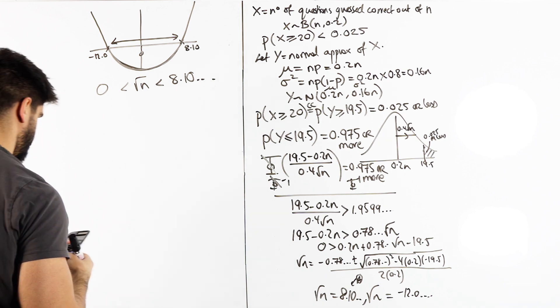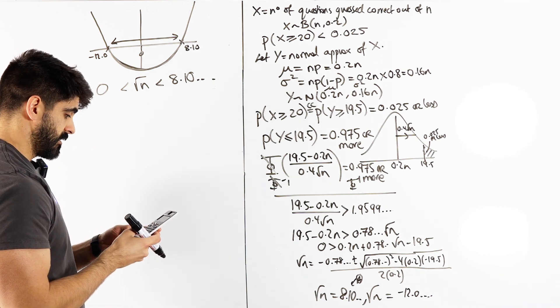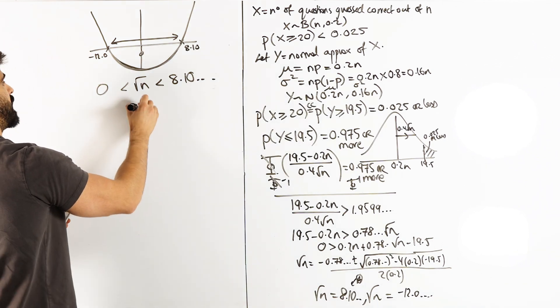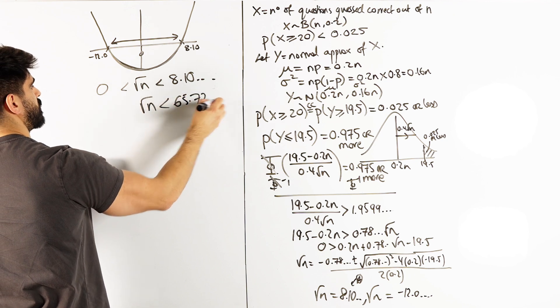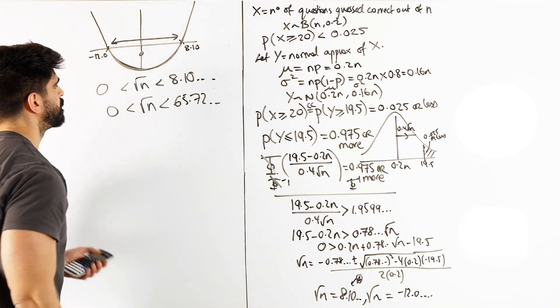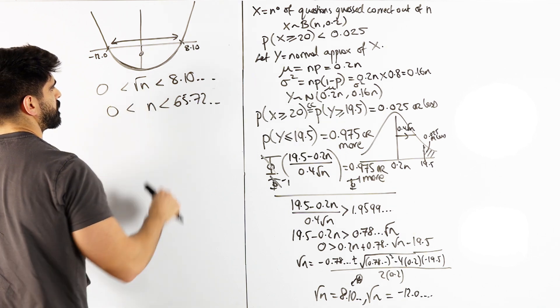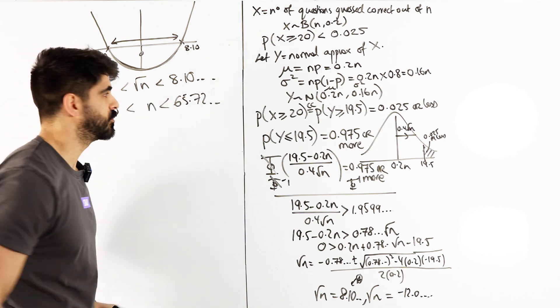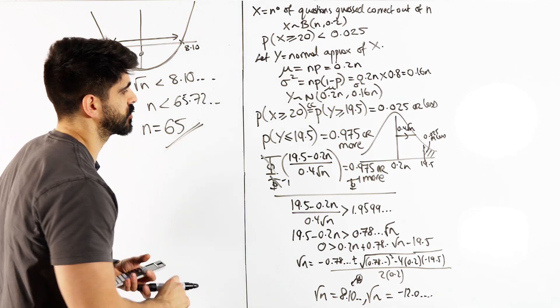So now we're actually going to square it. Did I save it? I think I did. Let me do it again. a squared, 65.72. So root n needs to be less than that 65.72 and greater than zero. Well sorry, n has to be. We squared that. Well, if n has to be less than this, it said what's the largest value of n we could possibly have? n has to be 65. And that is our solution.